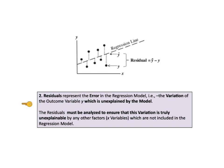KTU number 2 says, residuals represent the error in the regression model, that is, the variation of the outcome variable Y, which is not explained by the model. The length of each dotted line is the variation in Y for that data point from the model. Obviously, we'd like the residuals to be as small as possible, but there's more to it than that.